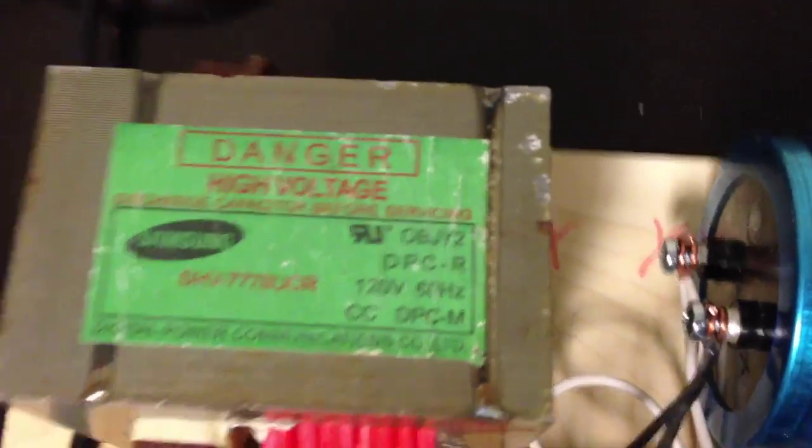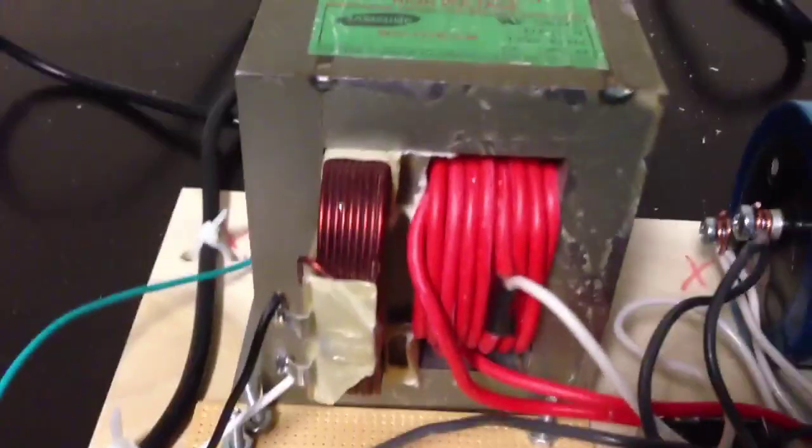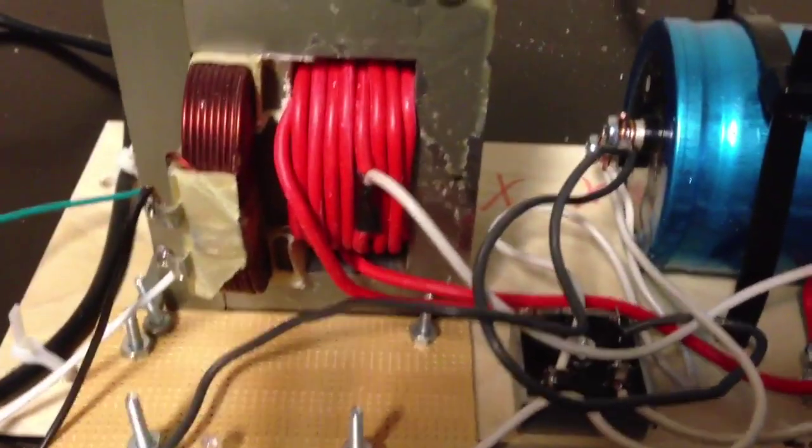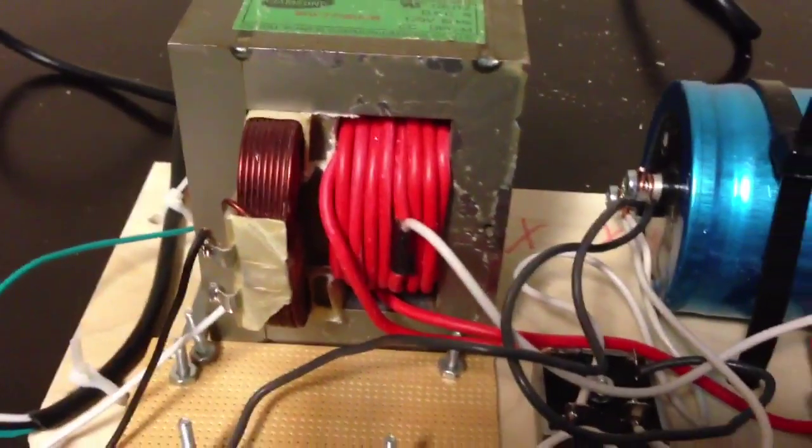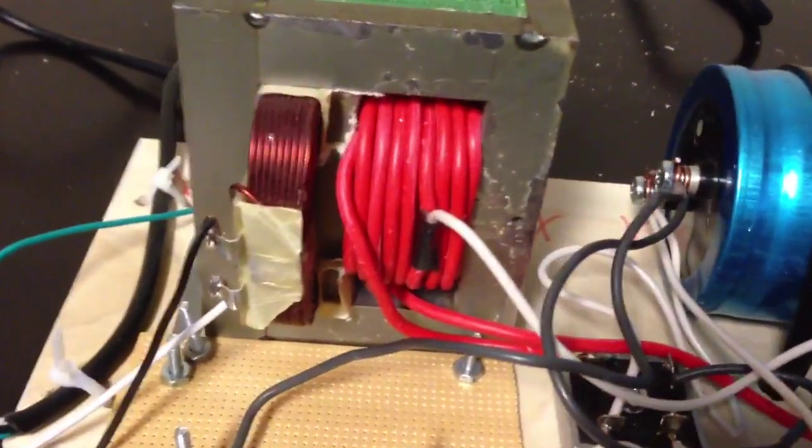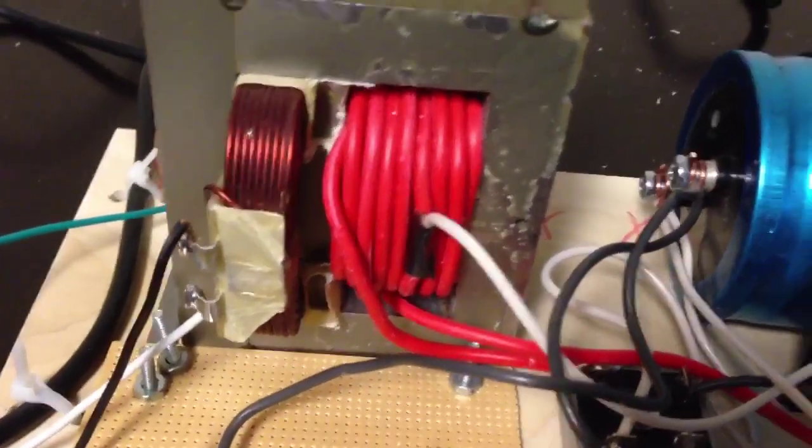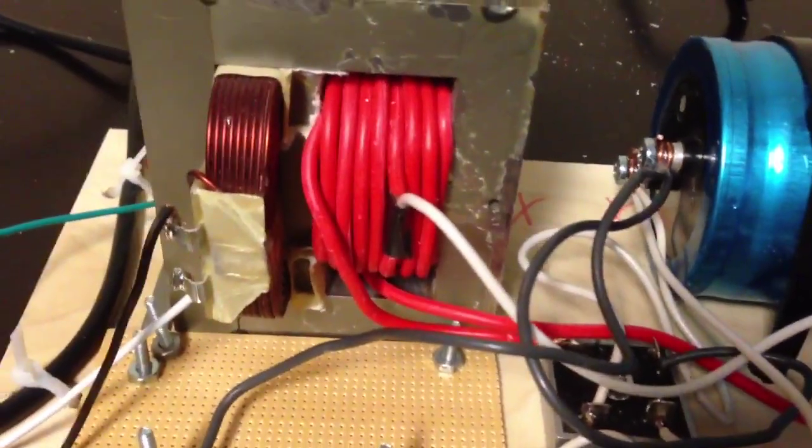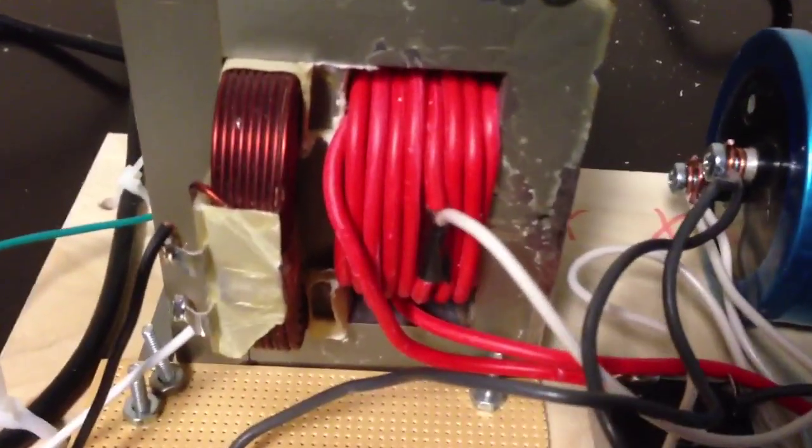I have a Samsung microwave oven transformer. I've stripped out the secondary. I've put 12 foot of 12 gauge stranded wire in place of the secondary that I took out.